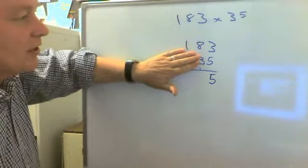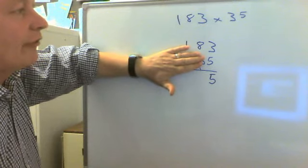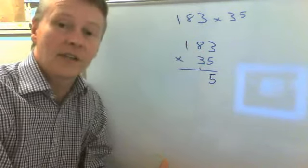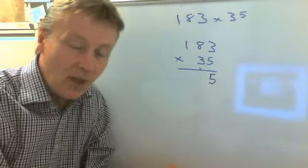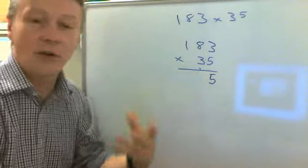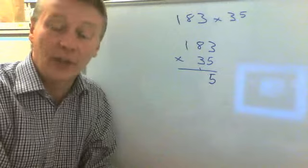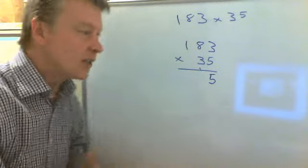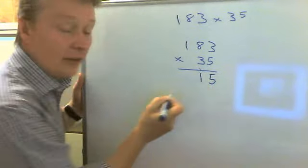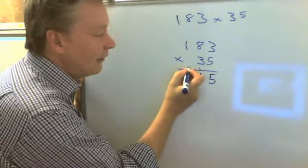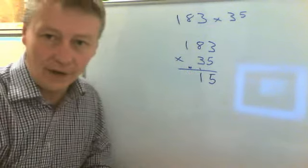The next thing I'm going to do is I'm multiplying 5 times 8. 5 times 8 is 40, but I must also remember that I've got one 10 carried over from the last time. So I need to write 41. So I write down the 1, and I carry the 4.